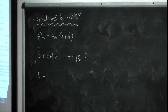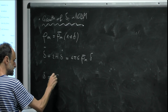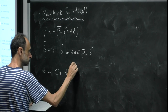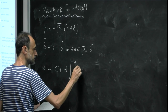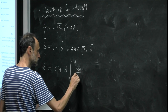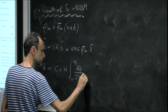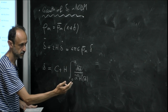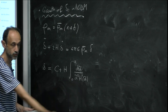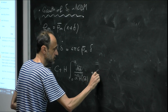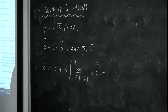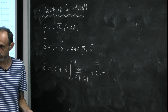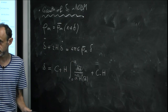There are two solutions to this equation. There is a growing mode, which is proportional to H times the integral of da / (a H)^3. And then there is a decaying mode, which goes like H. You can check that if you plug this into the equation and use the Friedmann equation, it satisfies the equation. This can be done as an exercise.